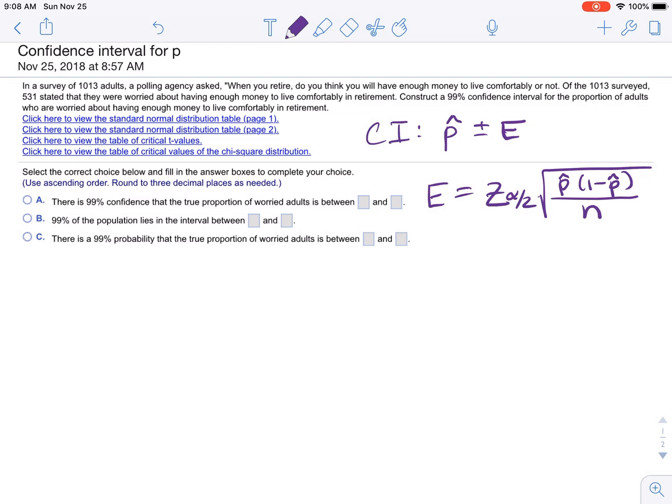Okay, so we're doing a confidence interval. It's pretty clear about that. We need a 99% confidence interval. We're doing it about the proportion.